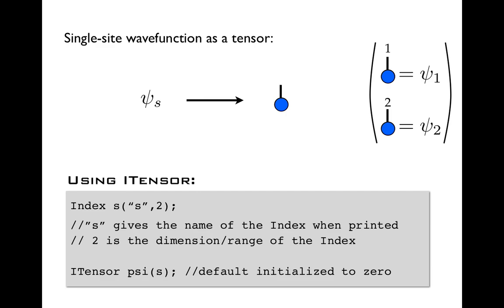So now we'll see our first example of itensor code. Actually, before we introduce the itensor, in C++ you have to declare an index object that defines this itensor. So we make this index object by making a new object of type Index with a capital I, and we give its constructor two arguments. The first is a string, s.